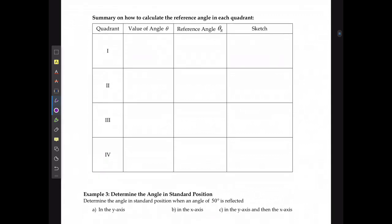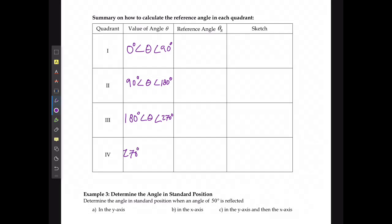In a summary of how to calculate the reference angle in each quadrant — looking at degrees between zero and 360 total — quadrant one is always between zero and 90 degrees. In quadrant two, it's between 90 and 180 degrees. In quadrant three, it's between 180 and 270 degrees. And in quadrant four, it's between 270 and 360 degrees.